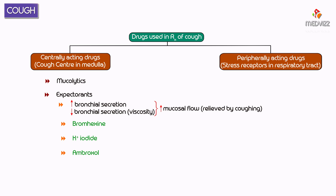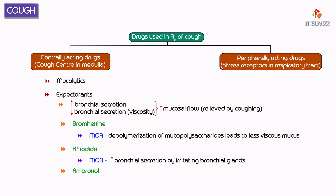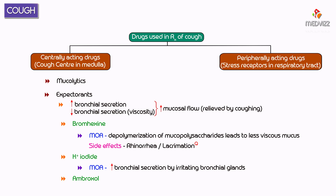Potassium iodide increases bronchial secretion by irritating the bronchial glands. Bromhexine causes depolymerization of mucopolysaccharides, resulting in production of less viscous mucus — it is a mucolytic drug. Ambroxol is also a mucolytic drug. The side effects of bromhexine include rhinorrhea or lacrimation.